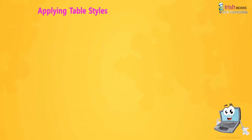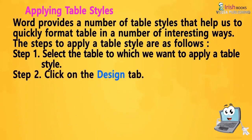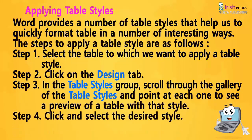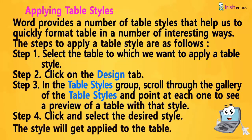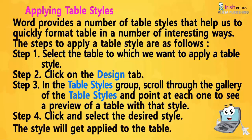Applying Table Styles. Word provides a number of table styles that help us to quickly format a table in a number of interesting ways. The steps to apply a table style are as follows. Step 1: Select the table to which we want to apply a table style. Step 2: Click on the Design tab. Step 3: In the Table Styles group, scroll through the gallery of table styles and point at each one to see a preview of the table with that style. Step 4: Click and select the desired style. The style will get applied to the table.